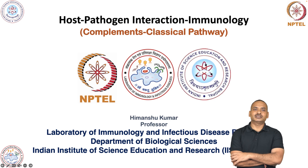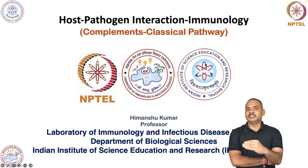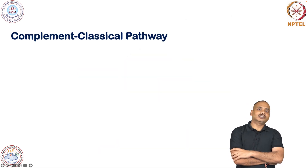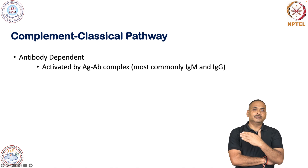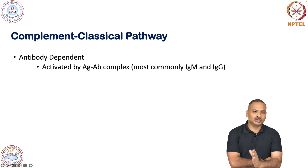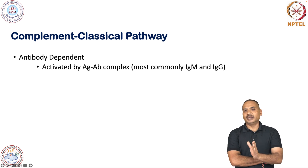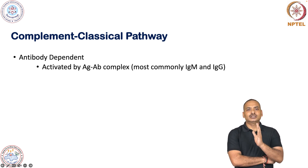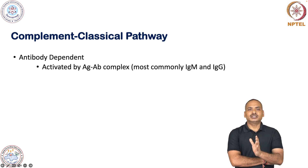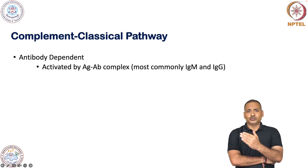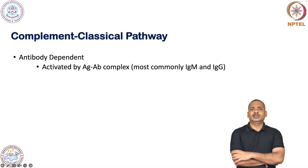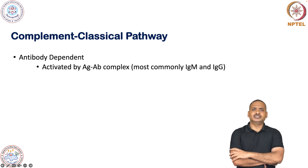This classical pathway, if you remember from the previous session, is triggered by antigen-antibody complex. Let us look at how it is activated. Basically this is antibody dependent — this is the only complement pathway which is activated by antigen-antibody complex. Therefore, the classical pathway is an antibody-dependent activation pathway. It is activated by various kinds of antibodies: IgM and IgG.